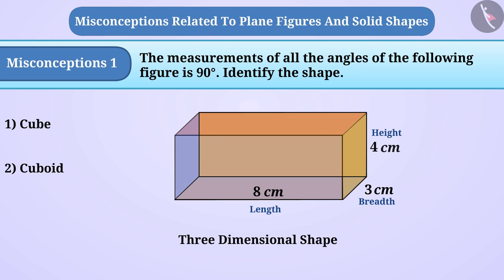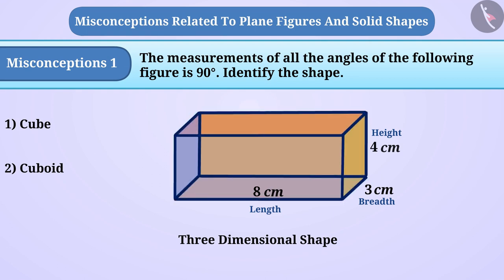Some children see that all the faces in the given three-dimensional figure are made up of four sides, so it is a quadrilateral. That's why they think that this is a cube.